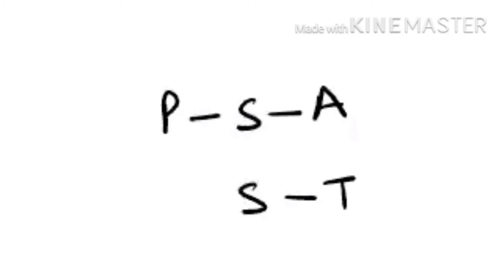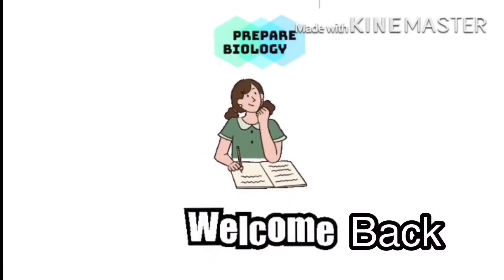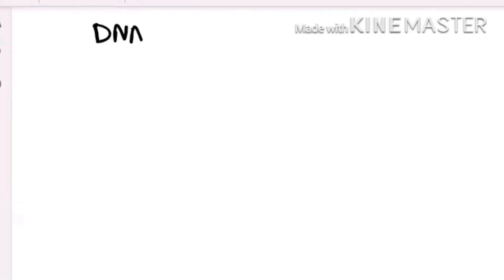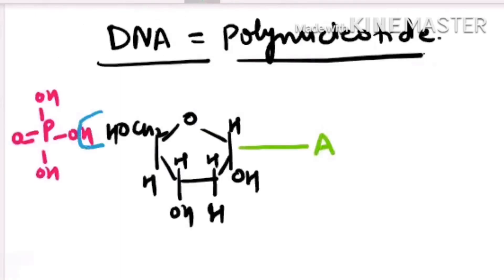In the diagram, these are the two nucleotides, and in between them this is the diester bond. We know DNA is a polynucleotide.